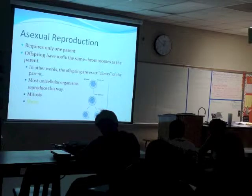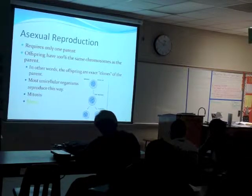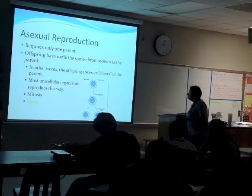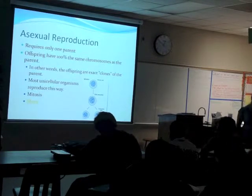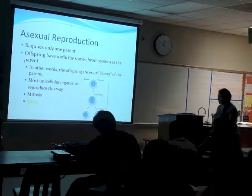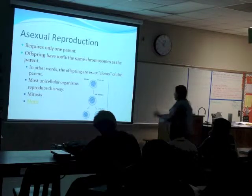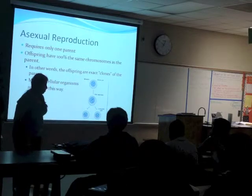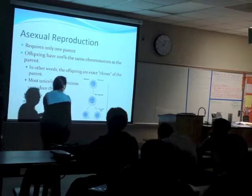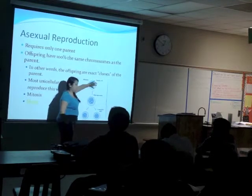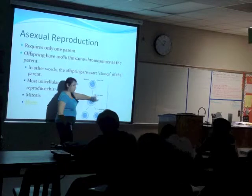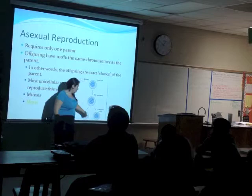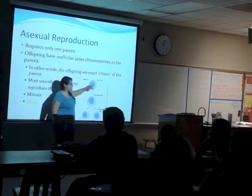Let's look at asexual reproduction first. In asexual reproduction, you always start off with one parent. 100% of the offspring — 100% of the babies — look exactly the same as the parent. They have the exact same DNA, the exact same chromosomes. Basically, it's a clone. So if we look at this picture, I have a parent cell. The DNA starts replicating, which basically means copying, and I end up with two exact same cells as the parent.